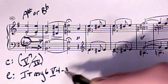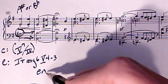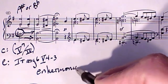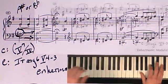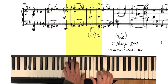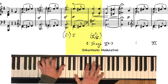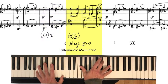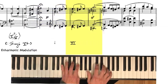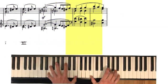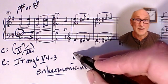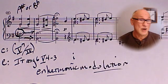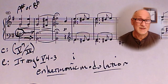So there you have it — an enharmonic modulation. In this case, a note that could have functioned with a different enharmonic identity in the old key is spelled so that it functions more clearly as a modulating agent, taking us to the new key. Augmented 6th chords are great chords to use for this kind of enharmonic modulation because of their inherent enharmonic spelling as dominant 7th chords. So there you have it: four types of modulation in one piece.